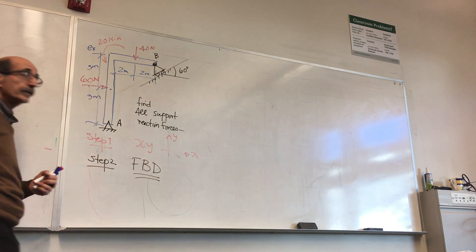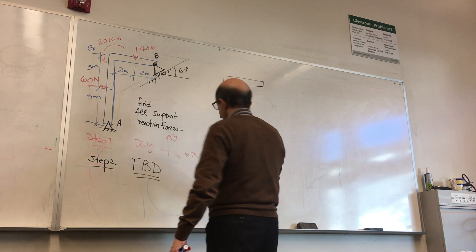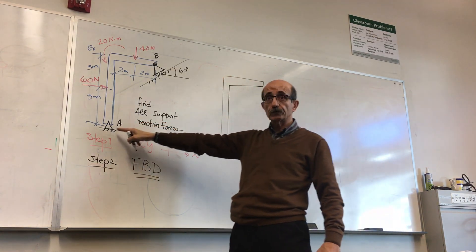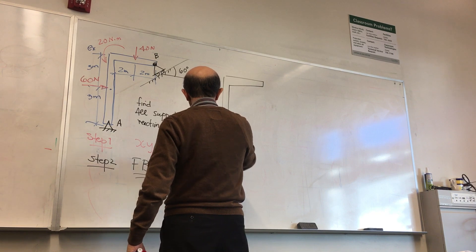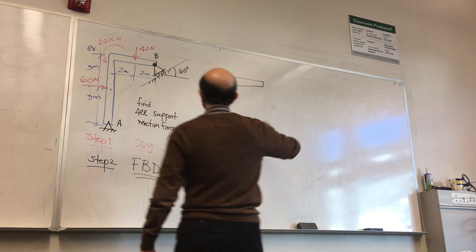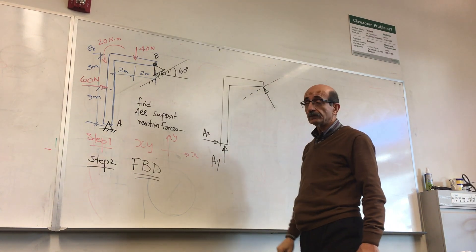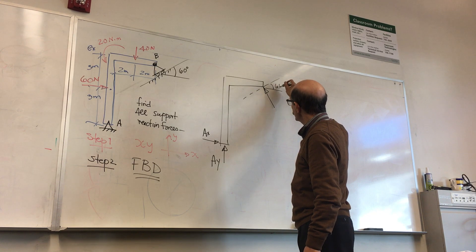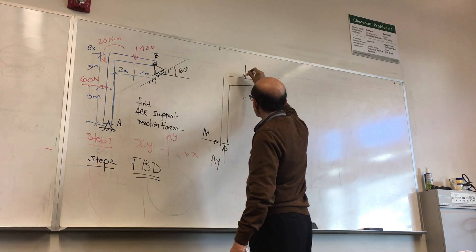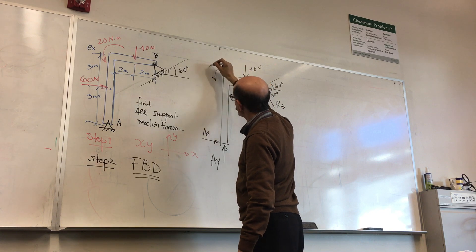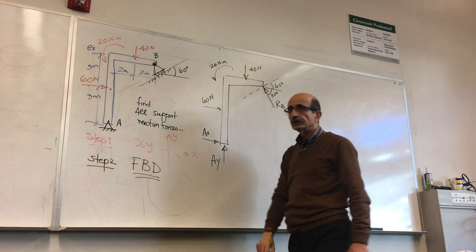For the free body diagram, cut this structure from its supports and replace back the effect of these forces the supports represent. At A, this is a pin, so you have two unknowns. Directions do not matter. At B, you have a force that does not allow motion perpendicular to the surface — the surface is at 60 degrees, meaning 30 degrees from horizontal — and this is RB. Put back the applied loads: 40 Newtons, the 20 Newton-meter moment, and the 60 Newton force. This is the free body diagram.